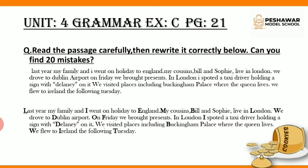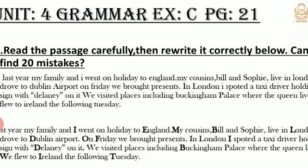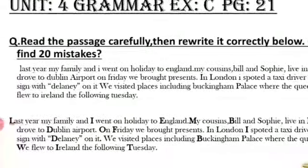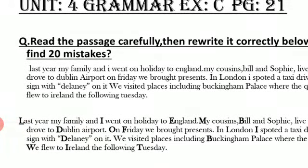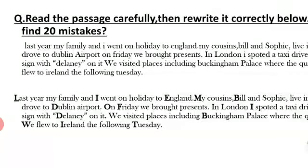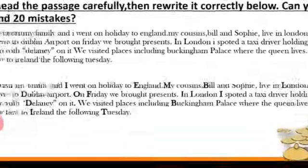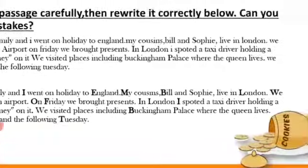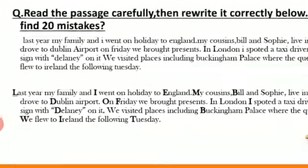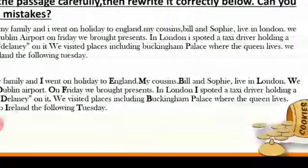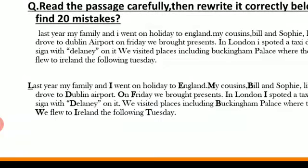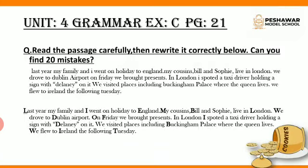Next is Exercise C, page 21: read the passage carefully then rewrite it correctly below. Can you find 20 mistakes? You have to find the 20 mistakes in the passage — these mistakes are just missing capital letters and missing full stops. For example: 'Last year my family and I went on holiday to England. My cousins Bill and Sophie live in London. We drove to Dublin airport. On Friday we brought presents. In London I spotted a taxi driver holding a sign with Delaney on it. We visited places including Buckingham Palace where the Queen lives. We flew to Ireland the following Tuesday.' It's very simple, you just have to put in the capital letters.